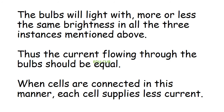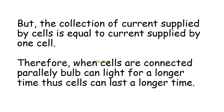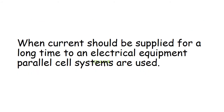In this activity, the bulbs will light with more or less the same brightness in all three instances. Thus the current flowing through the bulb should be equal. When cells are connected in this manner, each cell supplies less current, but the combination of current supplied by the cells is equal to the current supplied by one cell, so cells can last a longer time. When current should be supplied for a long time to an electrical equipment, parallel cell systems are used.